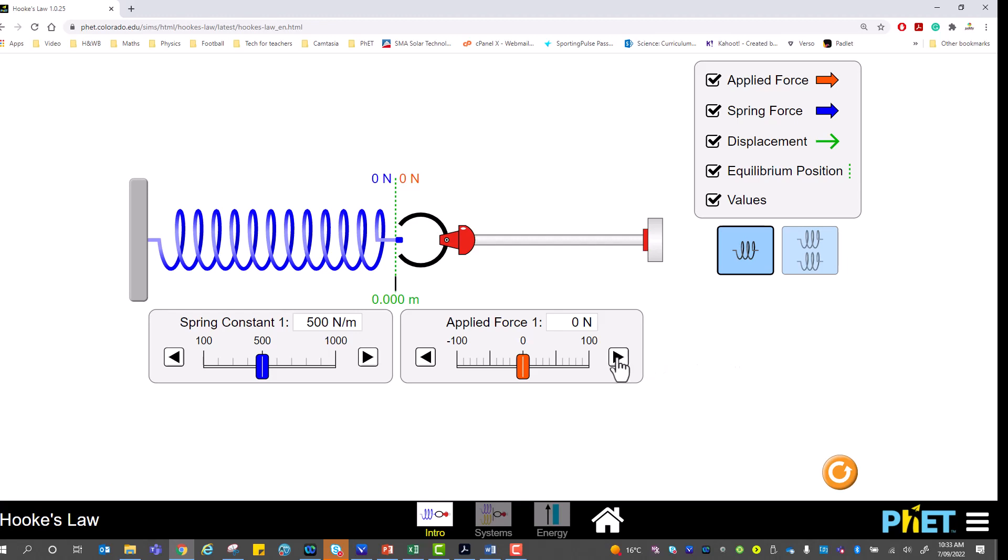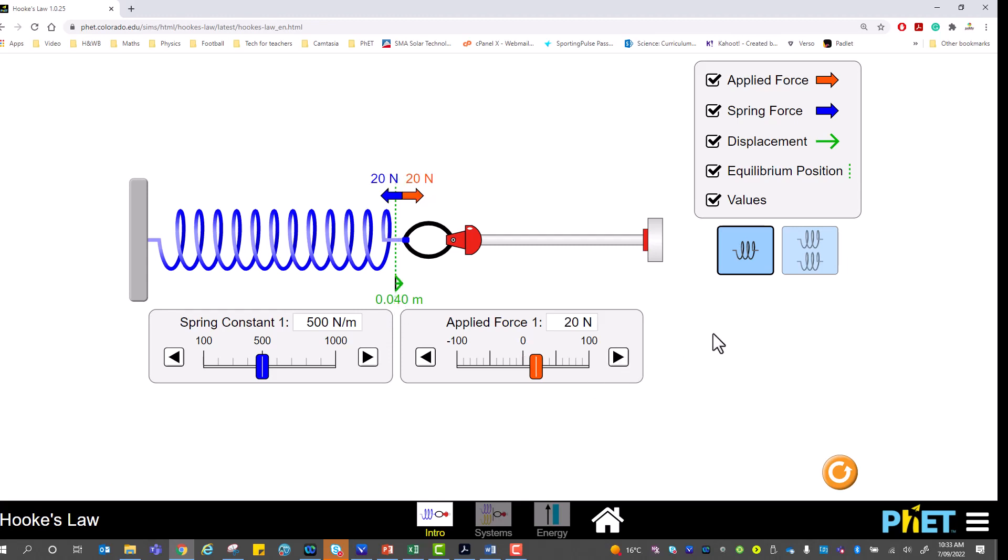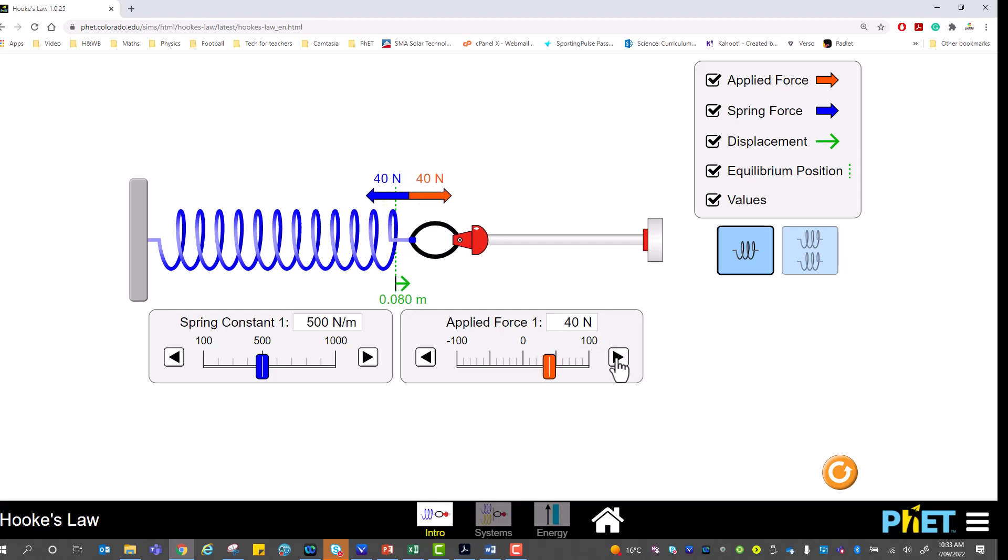Let's apply 10 newtons of force. So 10 newtons of force has displaced our spring by 0.02 of a meter, and I'd ask you to record that in Excel. 20 newtons of force generates an extension for this particular spring constant of 0.04 of a meter. 30 gives 0.06, going up in intervals of 10 newtons.